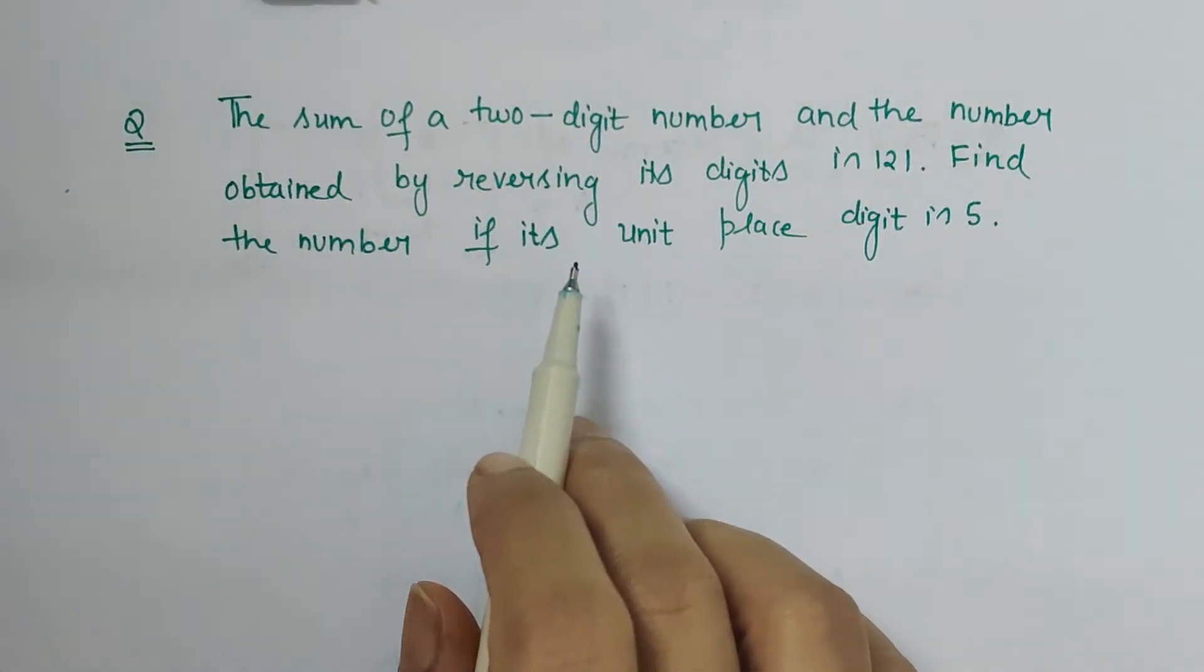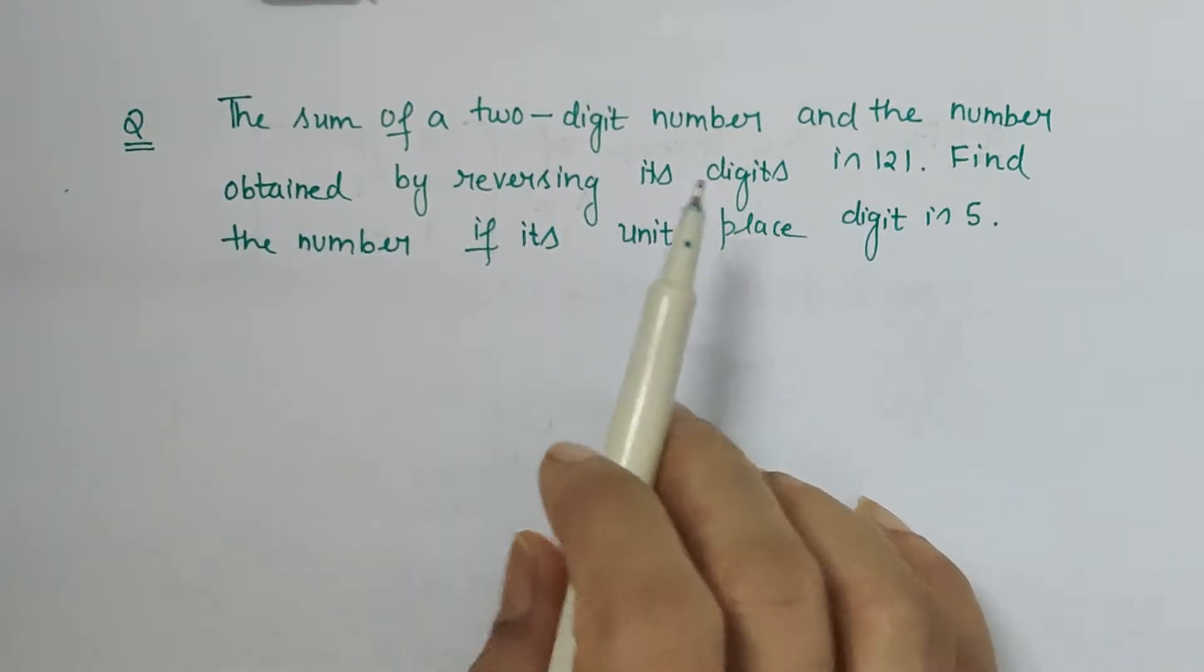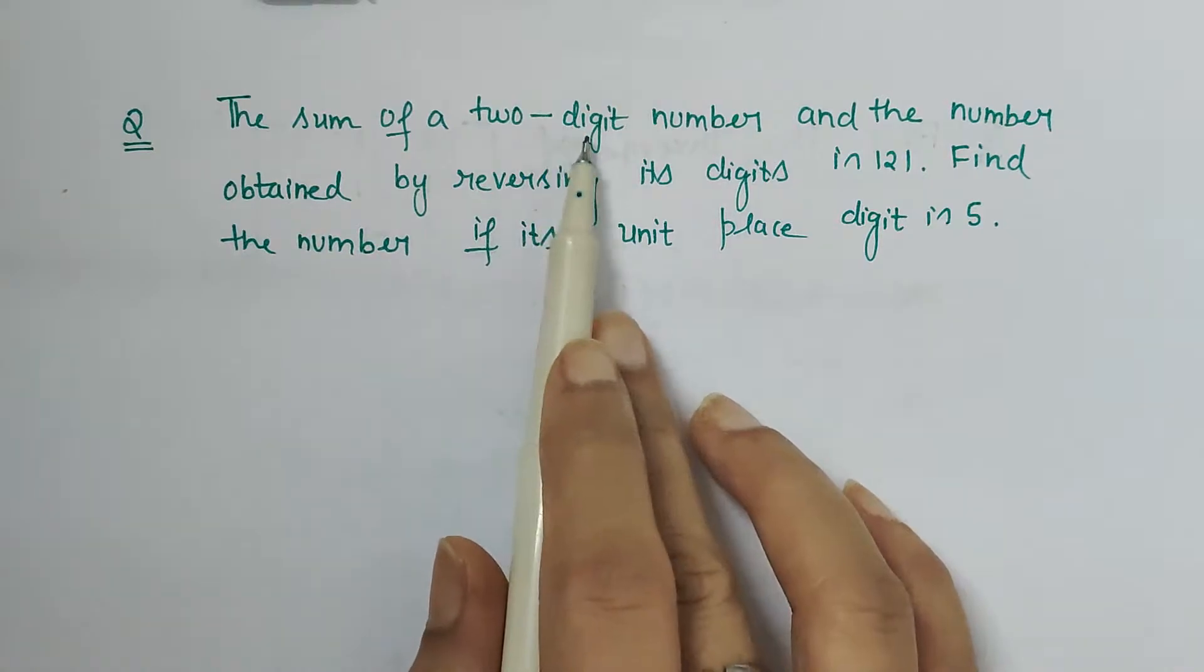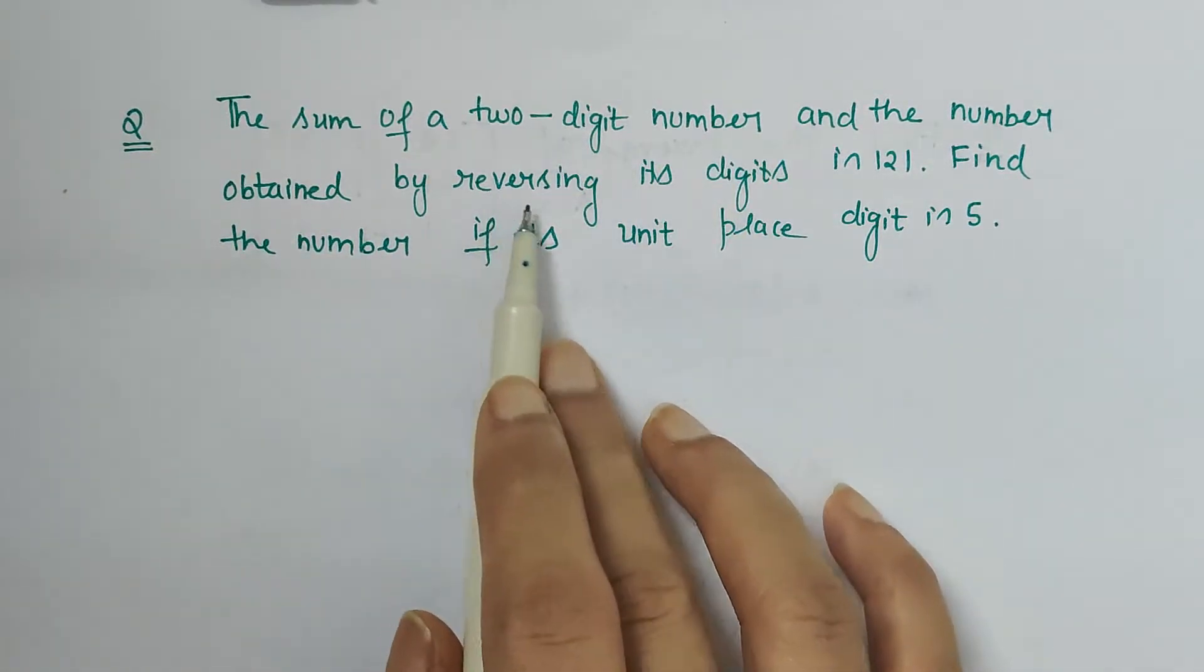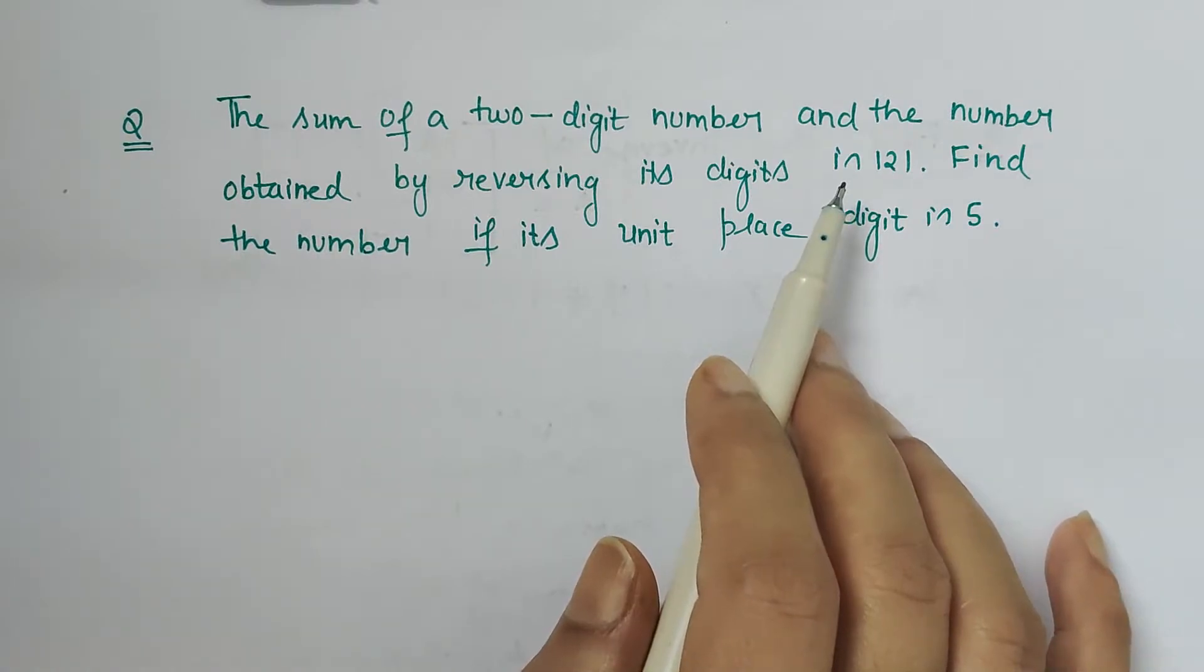Hello friends, in this question which is of linear equation in one variable of class 8, we have to find the number when its unit place digit is given to us as 5 and the condition given is the sum of a two-digit number and the number obtained by reversing its digit is 121.